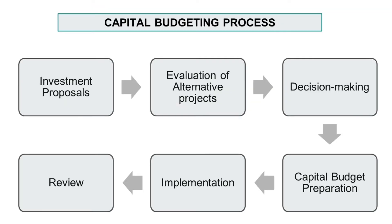Now let's understand the capital budgeting process. At the first stage, we start with investment proposals. There are various investment projects which companies look for to invest their funds — to expand the business, to run the business, or for several other reasons. These investment proposals are then evaluated, and along with them, various alternative projects are also evaluated so that we can determine how one project would be more useful than another and come to the best investment decision to minimize risk and maximize return.